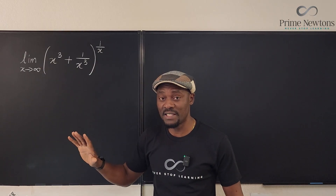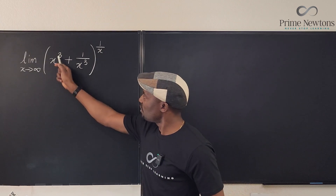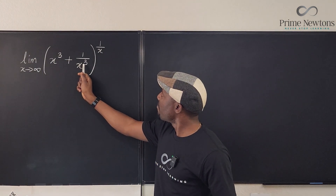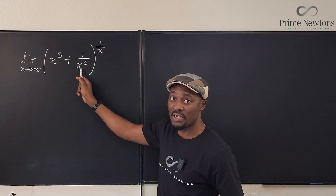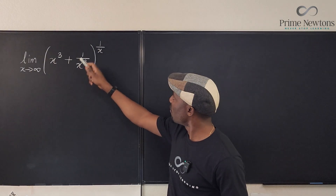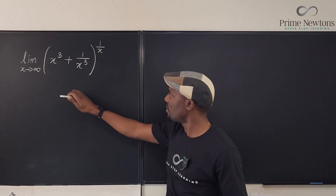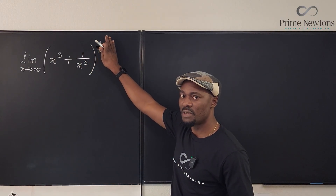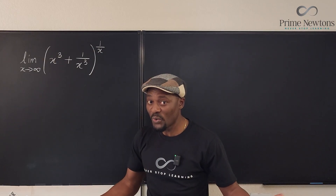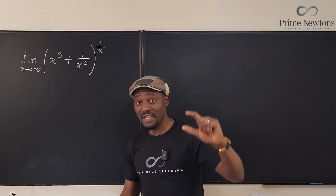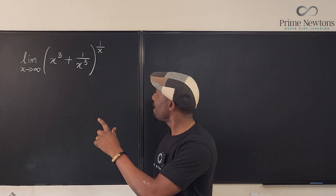Remember, you cannot plug in infinity. But you can reason: as x goes to infinity, x cubed goes to infinity, but 1 over x cubed goes to zero. So you have infinity plus zero, which gives you infinity. Then when you look at the exponent, as x goes to infinity it goes to zero. So you have a situation of infinity raised to the power zero. Infinity to the zero is what we call the indeterminate form — like writing zero over zero, so you cannot say you have an answer.